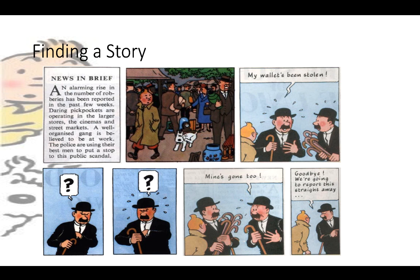For this workshop, we will develop the first scene from the comic, including a script, music, and images. Rather than using every frame, we've selected just some essential frames. There's an introductory news story about an alarming rise in robberies reported in the past few weeks, with pickpockets operating and so on. Then we see 1010 walking through the marketplace, coming upon two gentlemen. One says his wallet's been stolen, the other finds his is gone too, and they decide to report it. You can find the complete story on the web and develop from there.